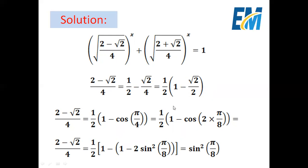But square root of 2 over 2 equals 2 cosine of pi over 4. So (2 minus square root of 2) over 4 equals one half times (1 minus cosine pi over 4). We can write pi over 4 as 2 multiplied by pi over 8. Recall that the double angle formula for cosine is: cosine 2 alpha equals 1 minus 2 sine squared alpha. So cosine of 2 times pi over 8 equals 1 minus 2 sine squared of pi over 8. Therefore (2 minus square root of 2) over 4 equals one half times (1 minus (1 minus 2 sine squared of pi over 8)). The 1 and minus 1 cancel out, minus and minus gives a plus, and one half multiplied by 2 is 1.